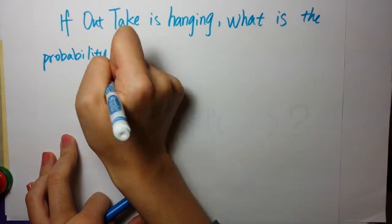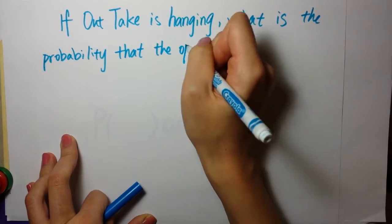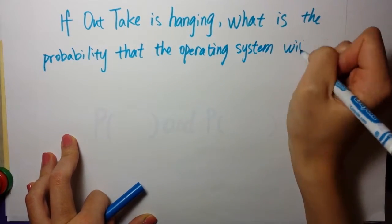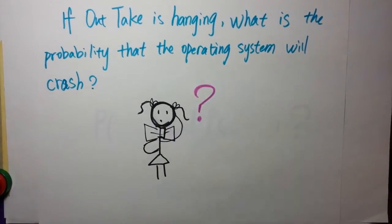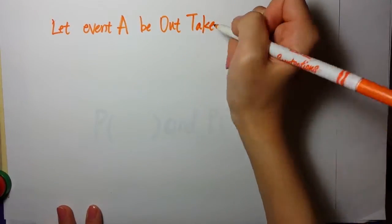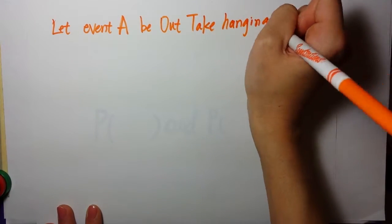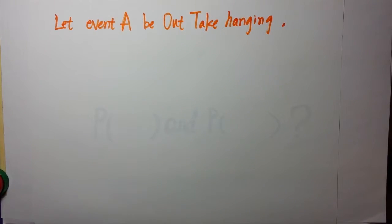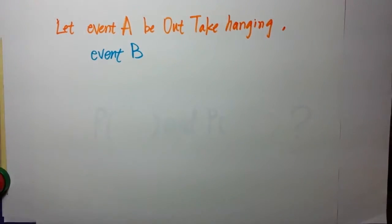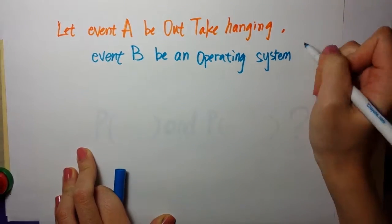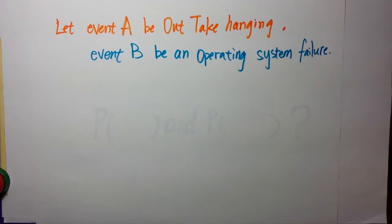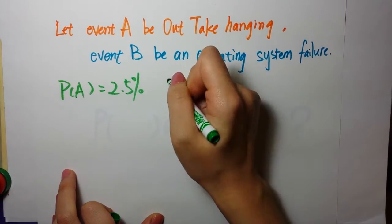So if Outlook is hanging, what is the probability that the operating system will crash? Serena is wondering. Let event A be Outlook hanging, and event B be an operating system failure. Since event A can trigger event B, the two events are dependent.